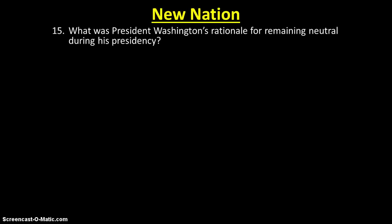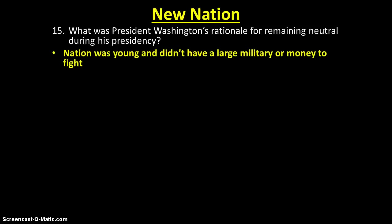The Constitution is made. We need to get our country going. So what was President Washington's rationale for remaining neutral during his presidency? Basically, he did not want to get his tush kicked. Our country was still really, really young. We didn't have a large military, and we just didn't have the money to fight. So really, he was just being practical. Good job, Washington.